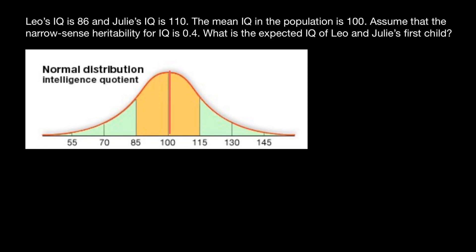We call this base population. Leo's IQ is 86, so around here. This point, this is Leo's IQ. Julie's IQ is 110, so about here, and this is going to be Julie's IQ.